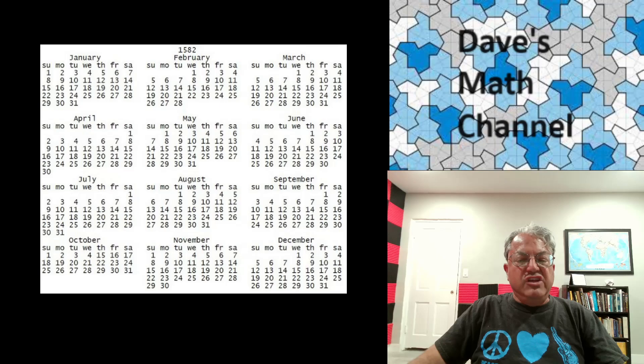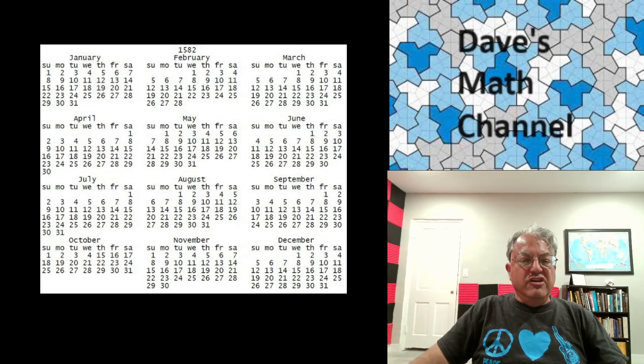It wasn't really that accurate because the actual year is about 365.242 days, and this was exactly 365.25. So by 1582, we'd already drifted about I think it was 10 or 11 days away from where we should have been. So Pope Gregory modified the calendar. He decided to eliminate leap years for turns of centuries, except if the century was divisible by four.